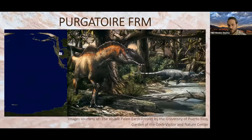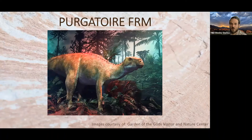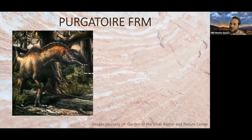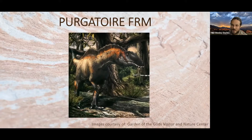The most famous locally would be Theiophytalia — the Garden of the Gods dinosaur. Theiophytalia literally means 'Garden of the Gods.' It was discovered in that same Purgatoire Formation layer at Garden of the Gods. To my knowledge, no dinosaur fossils have been found in Red Rock Canyon yet at the Purgatoire Formation. That dinosaur would have been running away from Acrocanthosaurus — about five percent smaller than a T-rex, but still a pretty big predator.